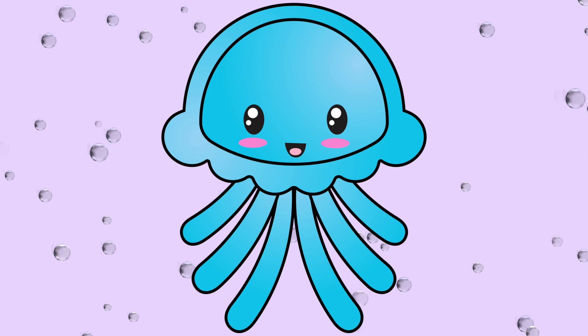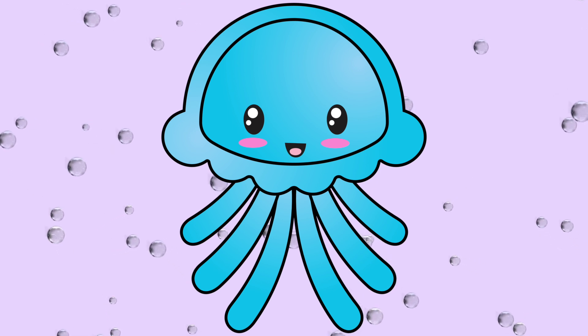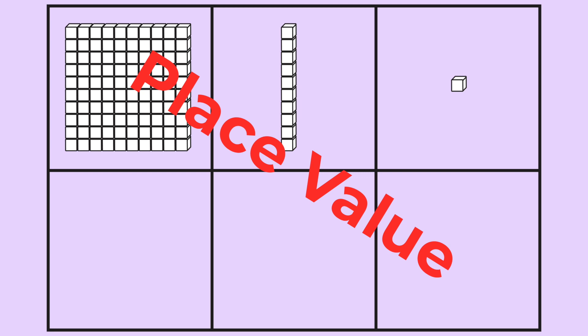Before Joey started comparing larger numbers, he remembered the idea of place value. And then he used this idea to compare our number pairs.